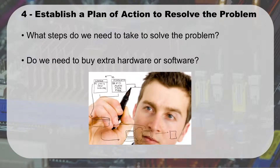The fourth step is to establish a plan of action to resolve the problem. Now that we've determined the internet wasn't working because the cables were good but there's an APIPA address — how do we resolve that? What steps do I need to take? Do we need to buy a new cable or new software? What's going to be the fix? Once we establish that plan, we move into step five where we start implementing it.